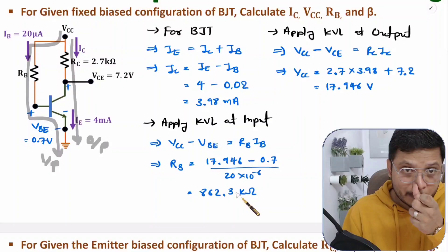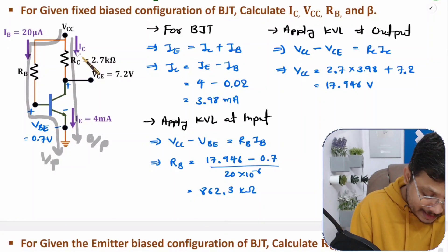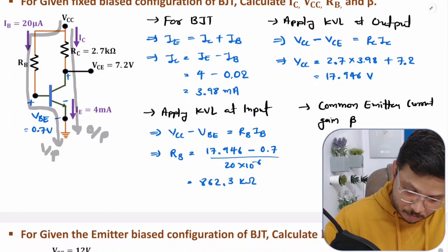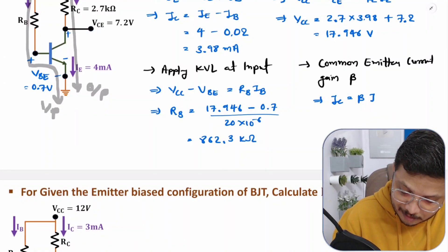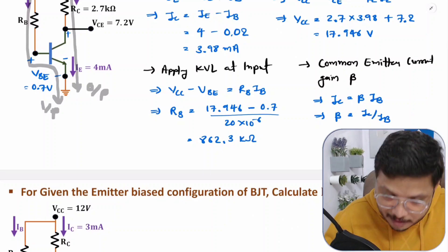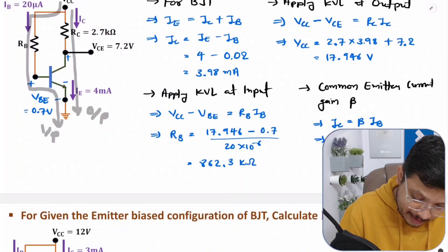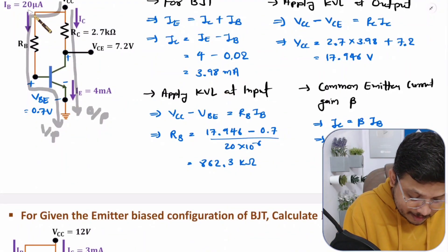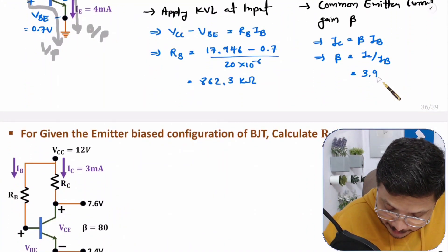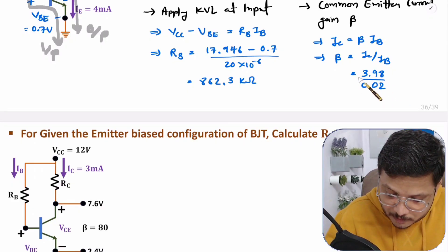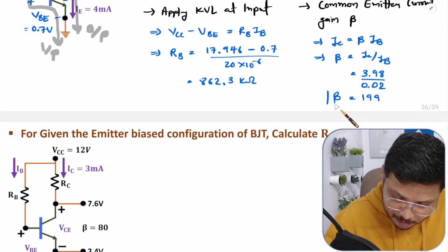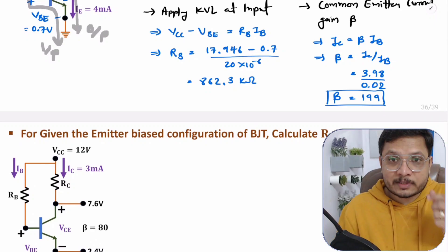Now, the last parameter is β. From IC and IB one can easily calculate β using the relation IC = β × IB, so β = IC / IB. Here IC is 3.98 mA and IB is 0.02 mA, so β = 3.98 / 0.02 = 199. That is how simply we can solve the equations.